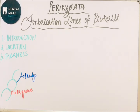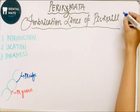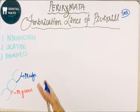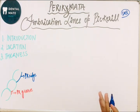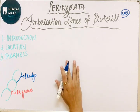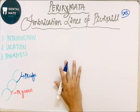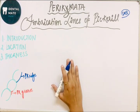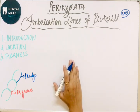Perichymeta is also known as imbrication lines of Pickerill. It is a surface structure of enamel. If this question is asked separately as a short answer question, you need to mention introduction, location, and thickness. Generally, it is also asked as part of the surface structures of enamel short answer question.